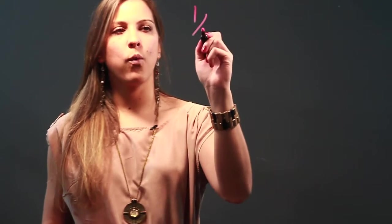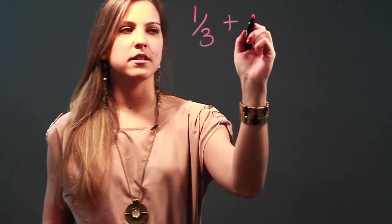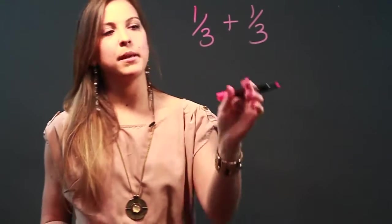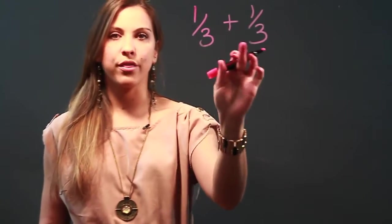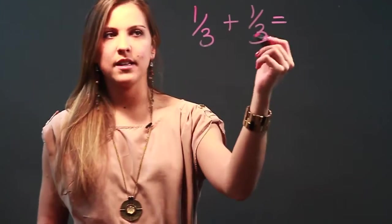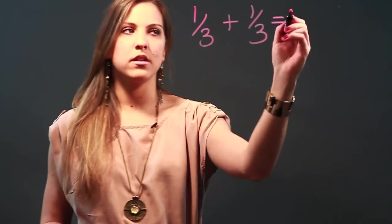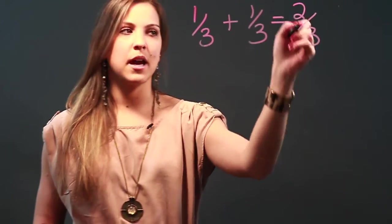So if I wanted to add 1 third plus 1 third, I can do it because both of the denominators are 3. And the way to do it is just add the numerator. 1 plus 1 is 2 and keep your denominator as 3.